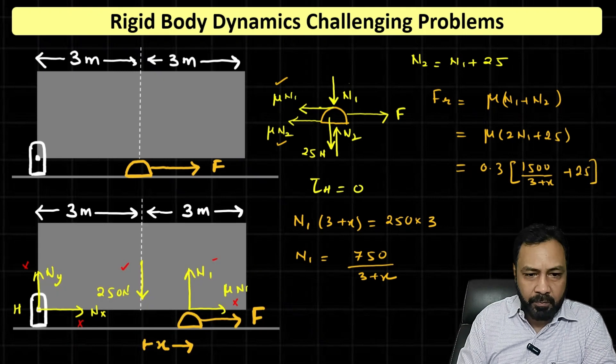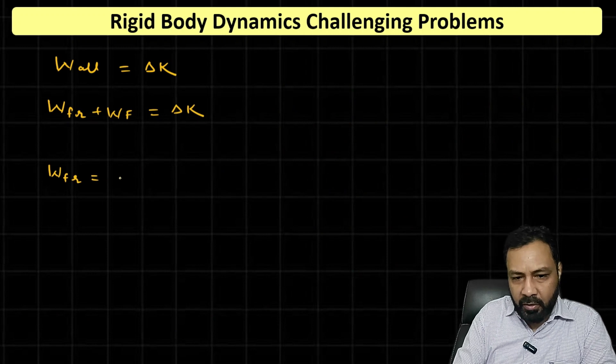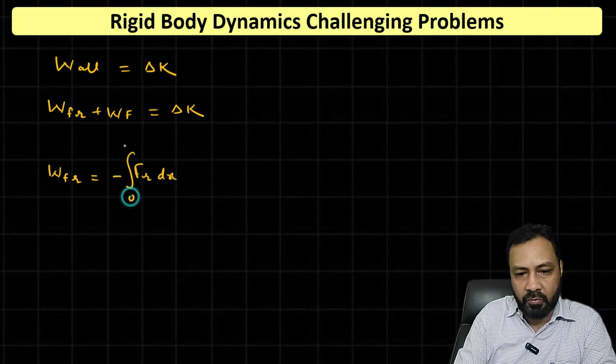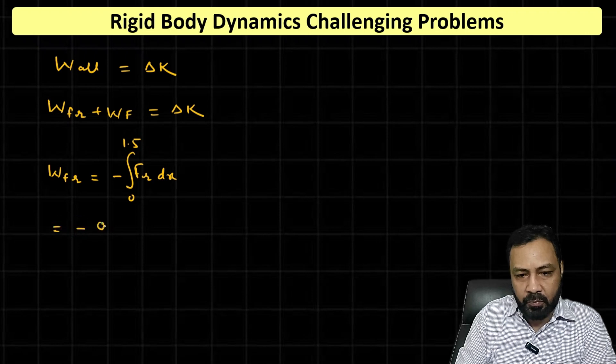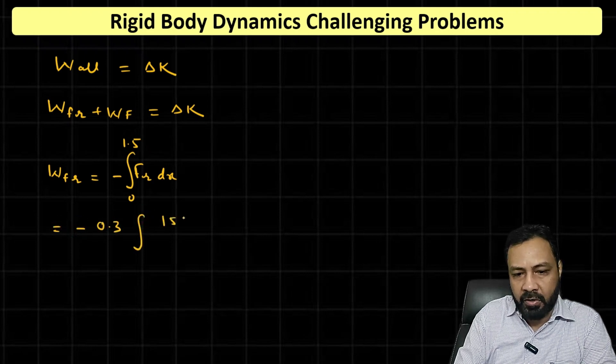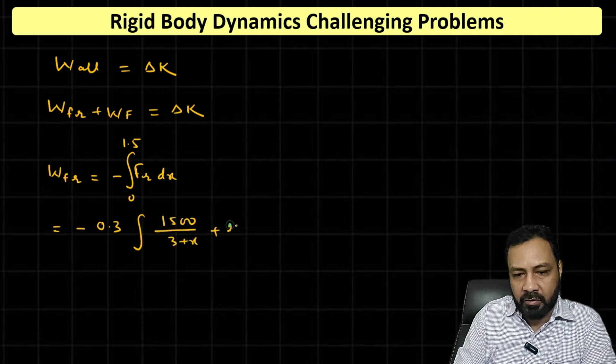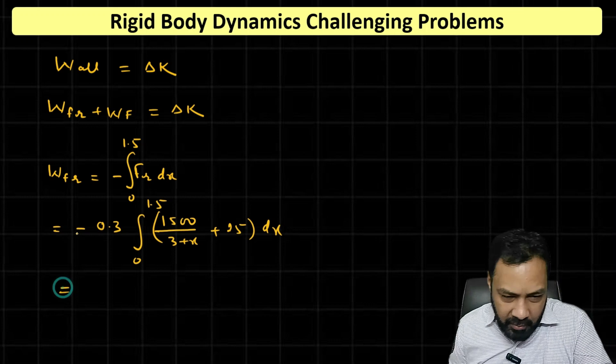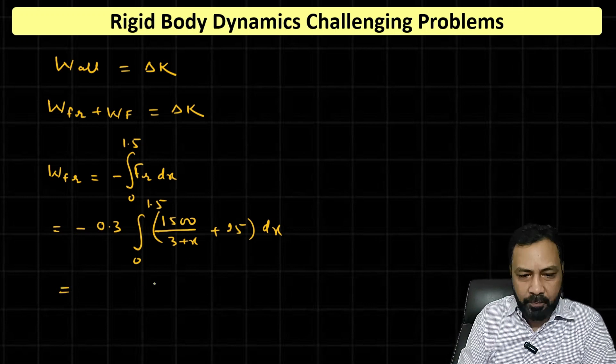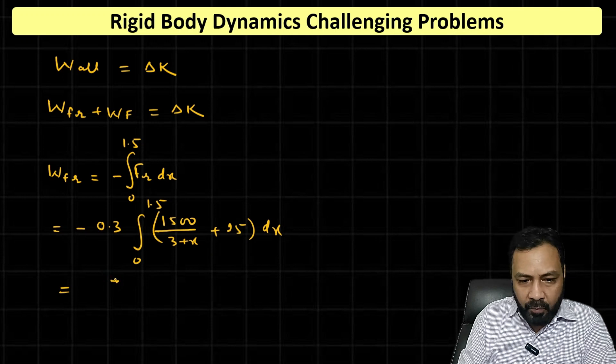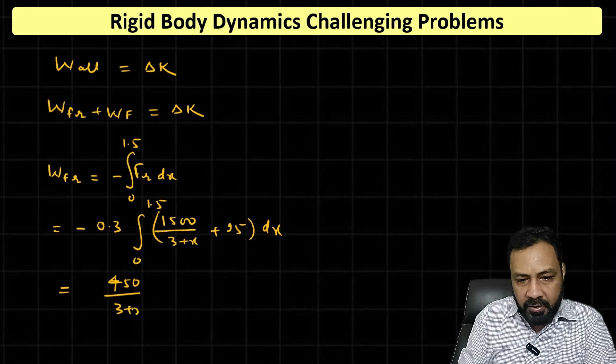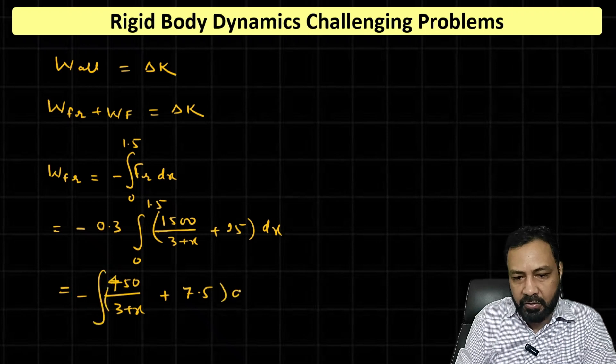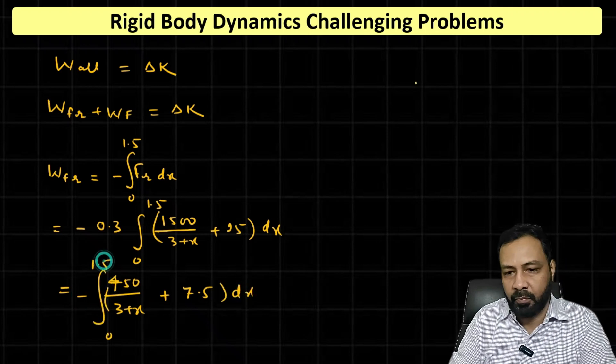So work done by friction is minus integral of FR dx from 0 to 1.5. This is minus 0.3 times 1500 divided by 3 plus x plus 25, dx from 0 to 1.5. Multiplying by 0.3, that will be 450 over 3 plus x plus 7.5, with negative sign on the outside, dx from 0 to 1.5.